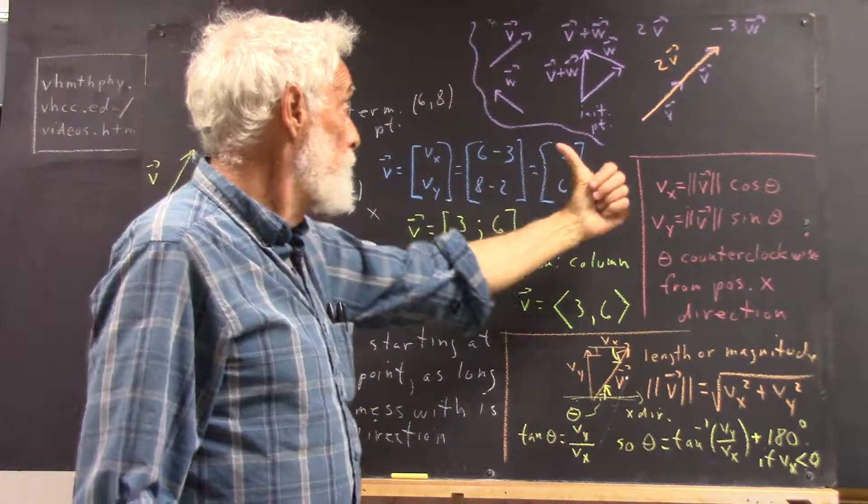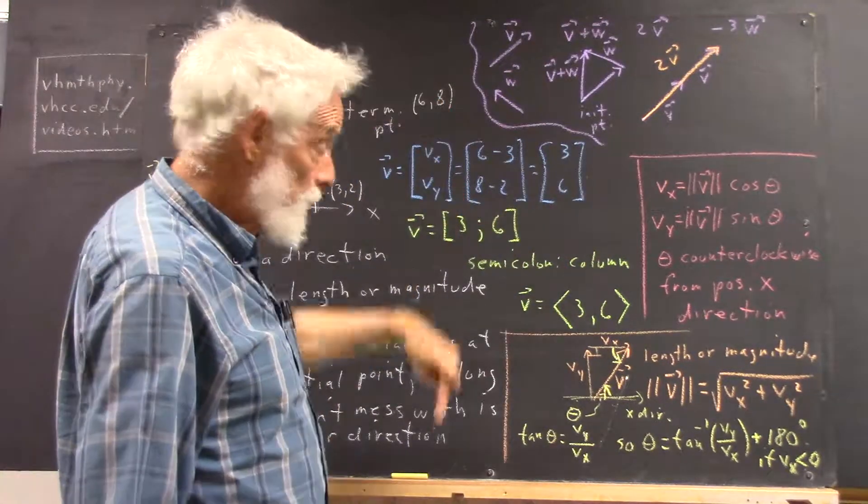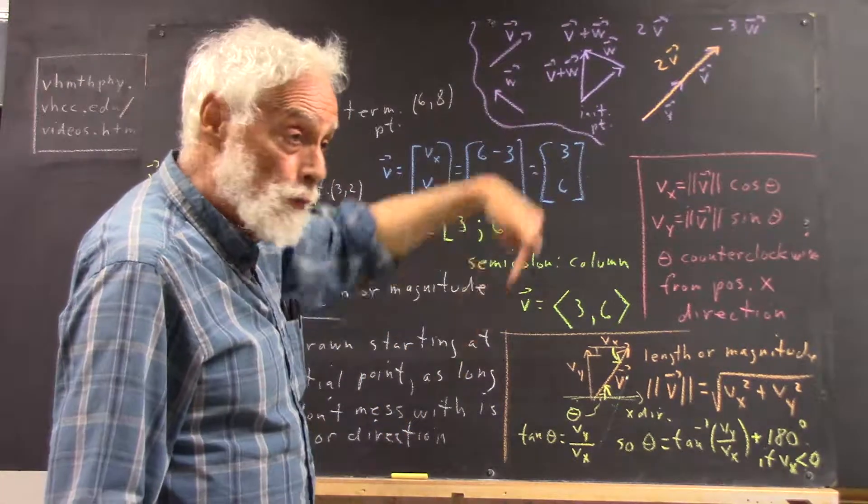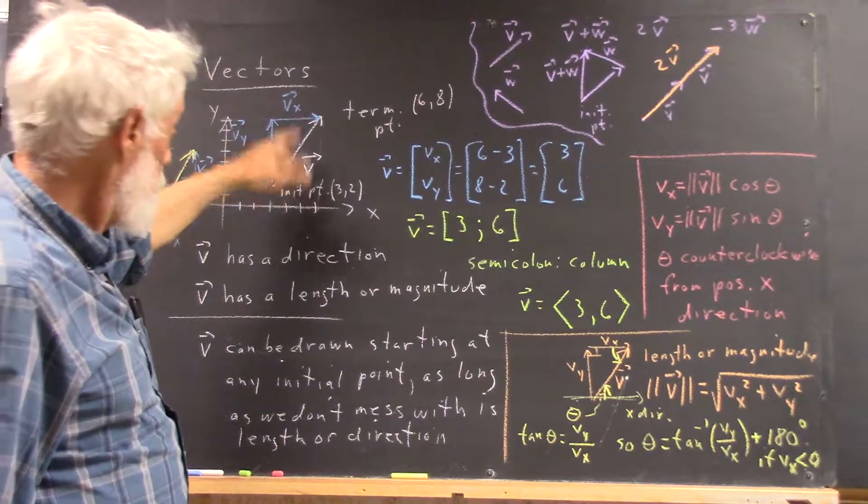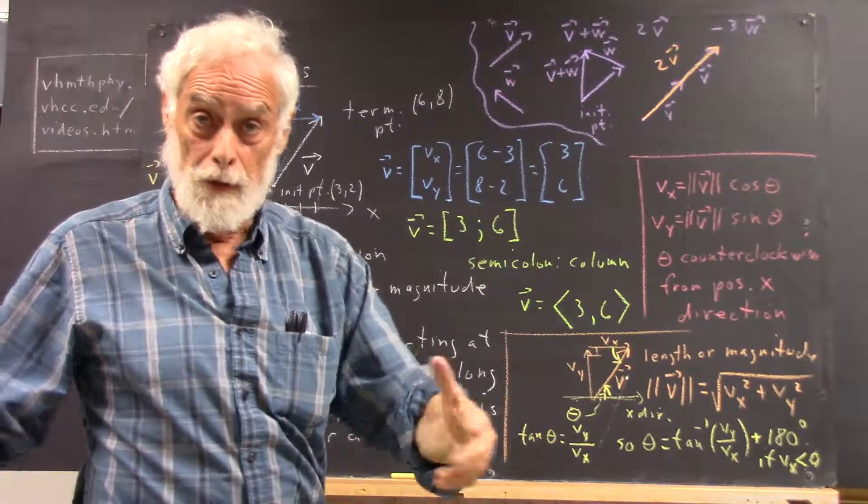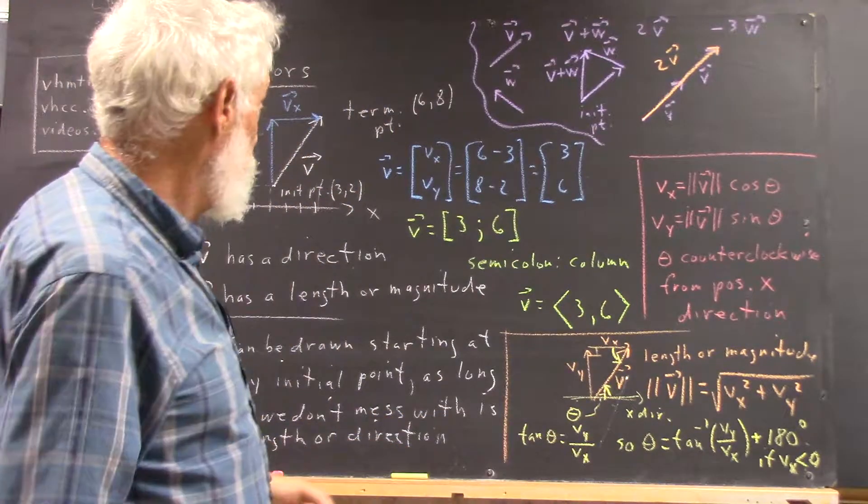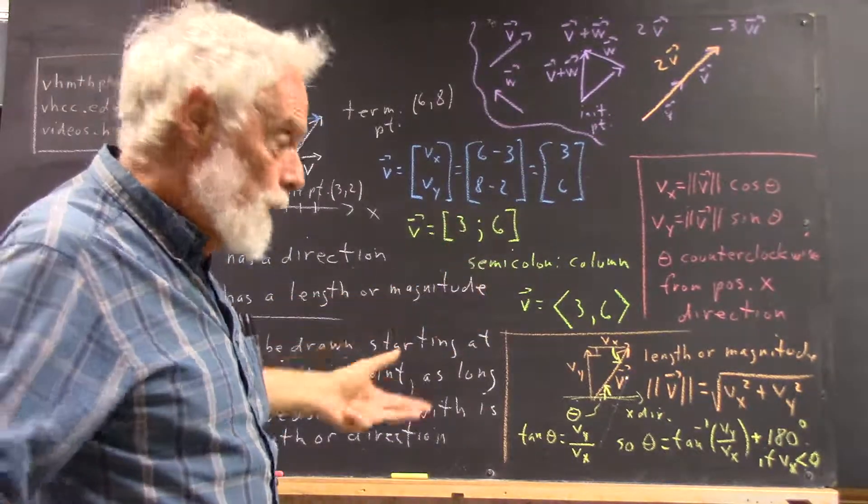Well, of course, negative 3 would mean my x component is in the negative direction, and negative 6 would mean my y component's in the negative direction, and that would reverse the direction of my v vector. Again, you don't have to totally understand that. I'm not going to test you on that with just that comment. I will develop it a little more thoroughly, but if you really understand it, then you're that far ahead.